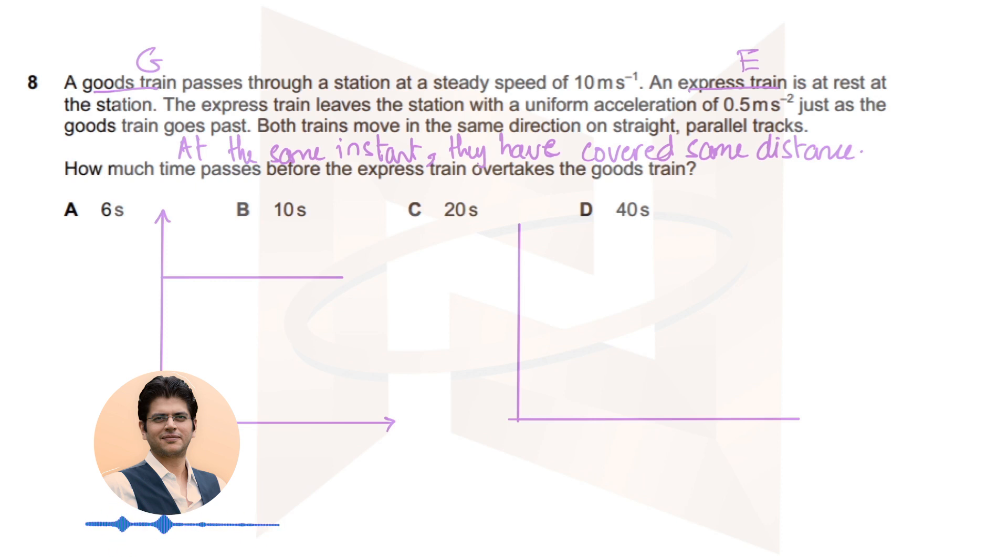The express train leaves the station with a uniform acceleration of 0.5, so remember we're drawing velocity-time graphs, so the velocity-time graph would be like a straight line passing through the origin. This acceleration will be constant, just as the goods train goes past, both trains move in the same direction on parallel tracks.